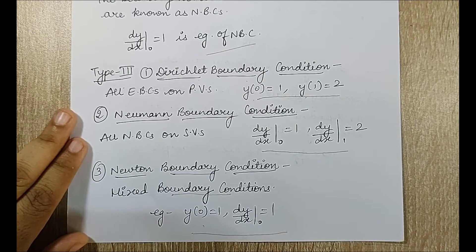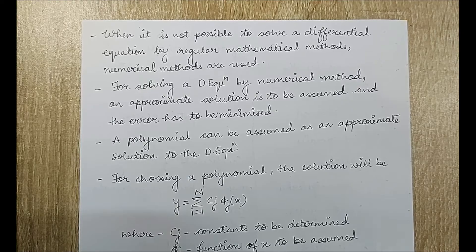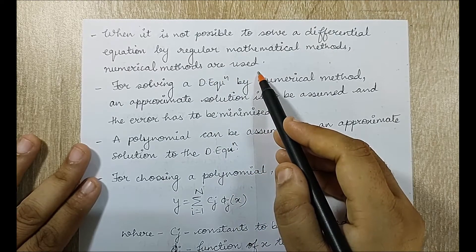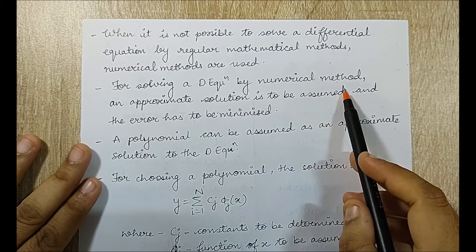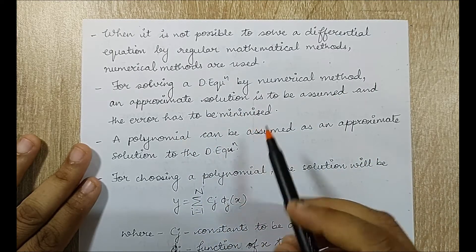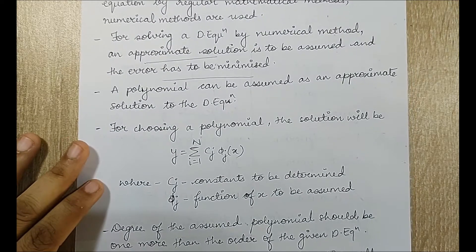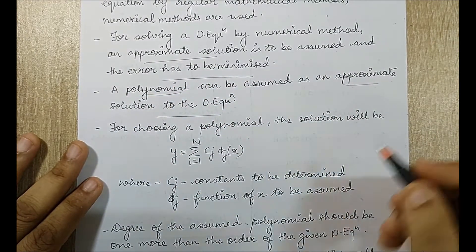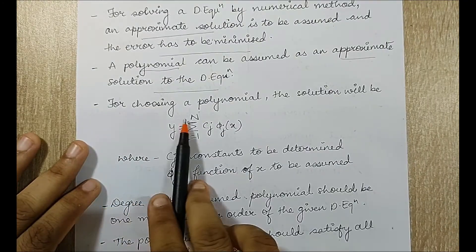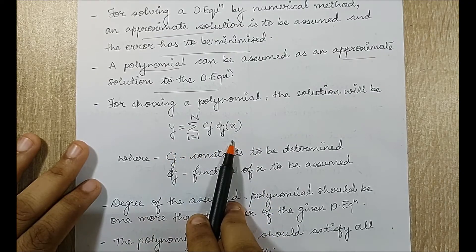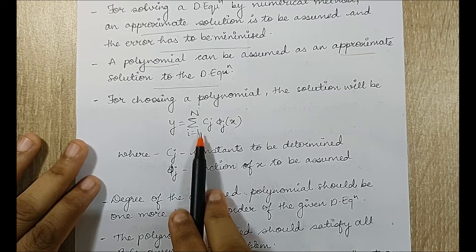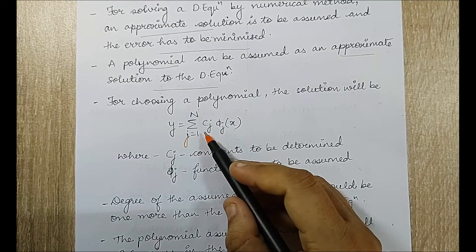Next we will talk about certain methods and rules for solving non-weak and weak type FEM problems. When it is not possible to solve a differential equation by regular mathematical methods, numerical methods are used. For solving a differential equation by numerical method, an approximate solution is assumed and the error has to be minimized. A polynomial can be assumed as an approximate solution, written as y equals summation from j=1 to n of c_j times phi_j(x).